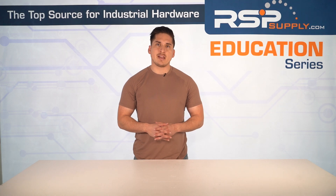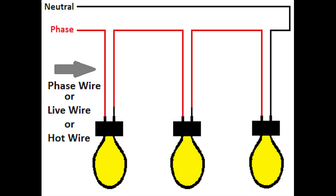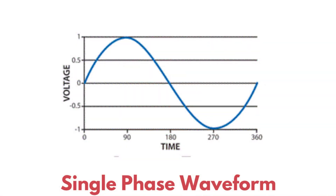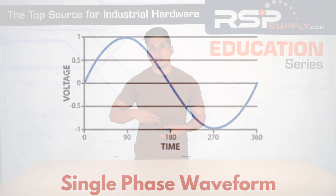So, single-phase power. It consists of a single alternating current waveform, typically delivered through two wires: one live or hot wire, and one neutral wire. In the U.S., single-phase systems operate typically at 120 volts or 240 volts. The voltage alternates between positive and negative values at 60 hertz, rising and falling in a single sine wave, which means power delivery is not constant — it drops to zero twice per cycle.